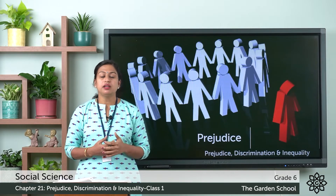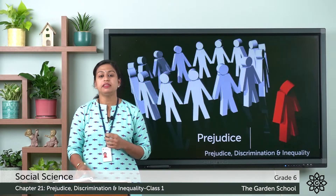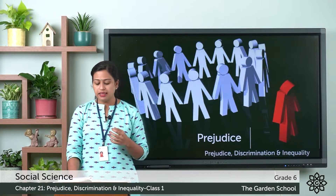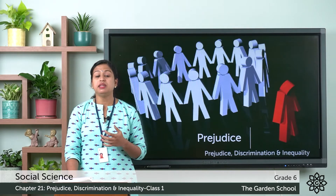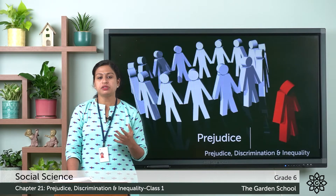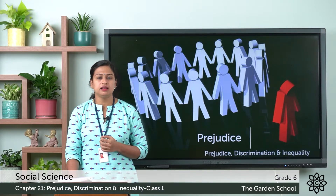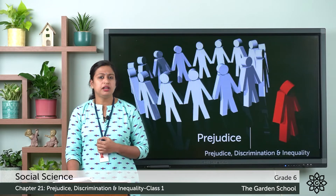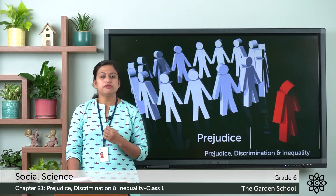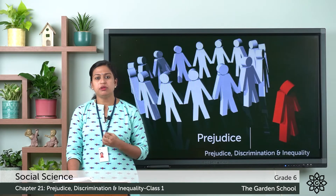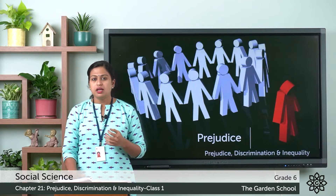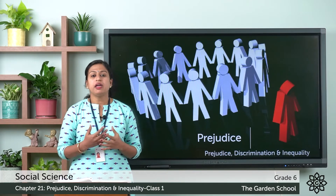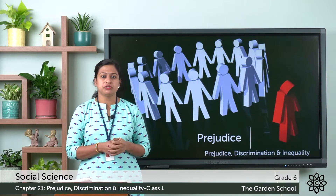Different groups of people live in the world, and people get prejudiced against many things — like complexion or skin color, the language they speak, religion, the region they belong to, and so on. We should be aware of the causes of prejudice.